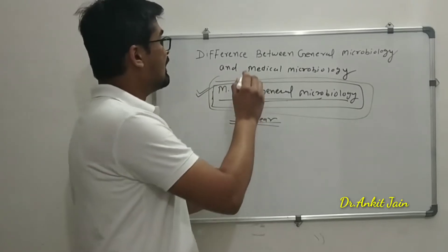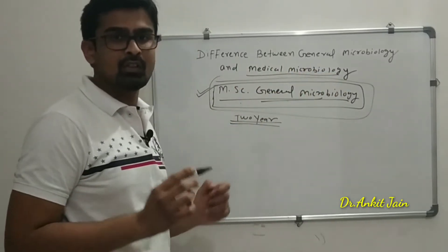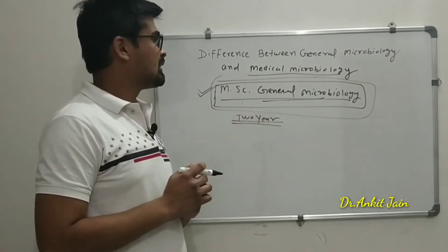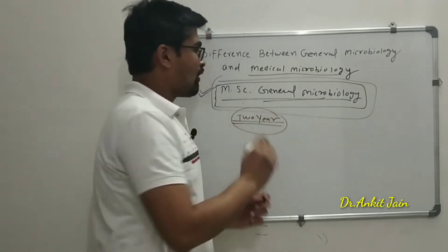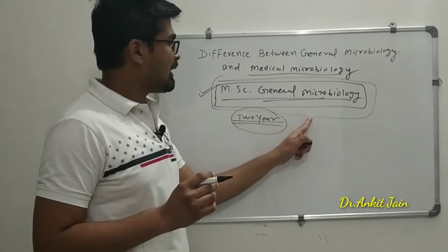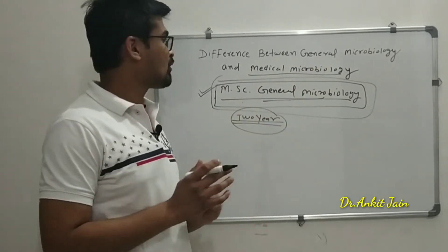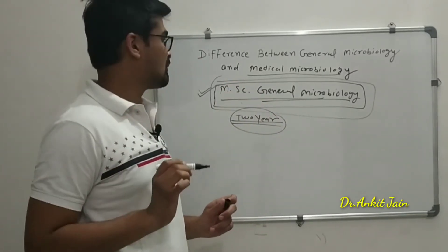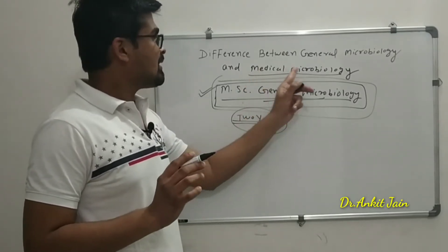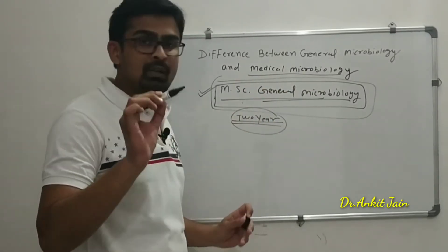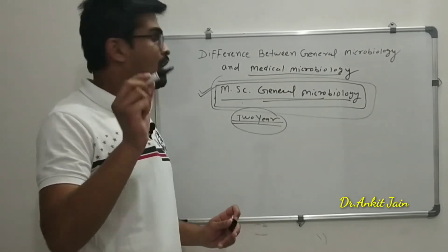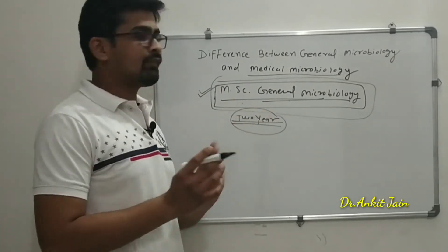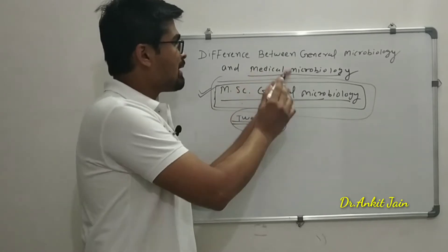Now we will discuss MSc in medical microbiology. Many students have different perceptions about this course. The basic difference between MSc in general microbiology and MSc in medical microbiology is that MSc in general microbiology deals with the study of microorganisms, while MSc in medical microbiology deals with the prevention and treatment of disease caused by harmful microorganisms in humans.